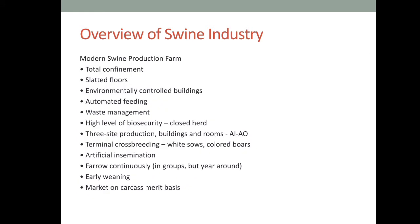Here are the requirements to produce a modern production farm or to be a successful swine producer: total confinement, slatted floors, environmentally controlled buildings, automated feeding, waste management, high level of biosecurity, three-site production, buildings and rooms, terminal crossbreeding, white cells, cold road boars, artificial insemination, farming continuously, early weaning, and marketing on carcass merit basis.